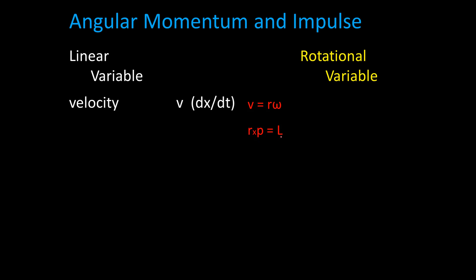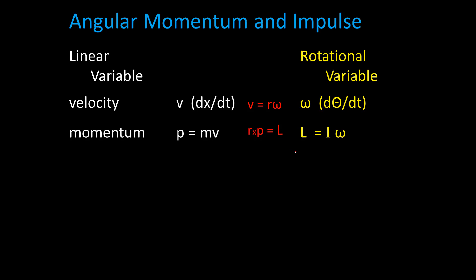Our velocity has its correlation of angular velocity, omega, in the rotational world. Our momentum P equals MV has the symbol L, being I omega. But we could also express that as the radius times our mass times velocity. That comes in handy when we look at discrete components — if we look at our momentum at a certain distance from some pivot, we can come up with our angular momentum.